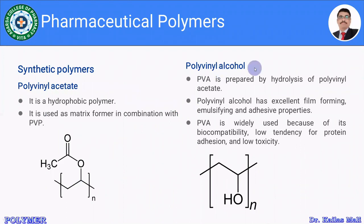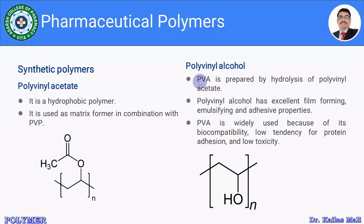Polyvinyl alcohol (PVA) is prepared by hydrolysis of polyvinyl acetate. PVA has excellent film-forming properties as well as emulsifying and adhesive properties. It is widely used because of its biocompatibility, low tendency for protein adhesion, and low toxicity. Polyvinyl acetate is used as a matrix polymer in combination with polyvinyl pyrrolidone, which acts as a pore former.